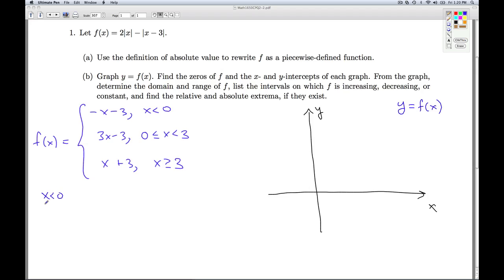So for x less than 0, I'm going to be graphing y equals negative x minus 3. And that's a line. So all I need is two points, connect the dots, and I'm done. I'll pick one value less than 0, say negative 2. The opposite of negative 2 is a positive 2. 2 minus 3 is negative 1. So there it is.